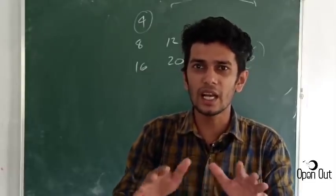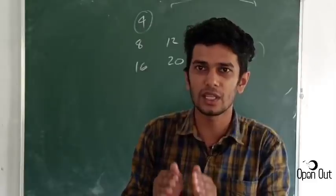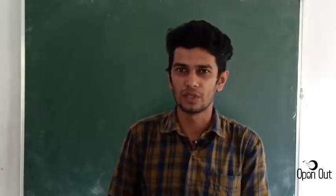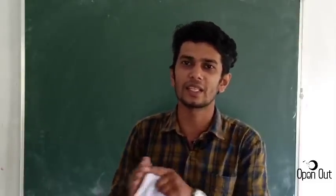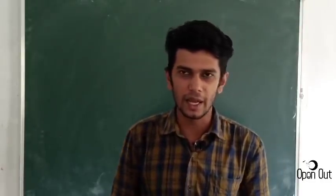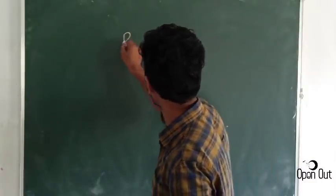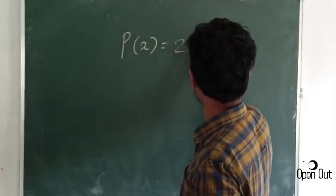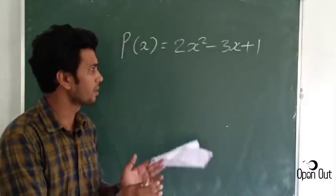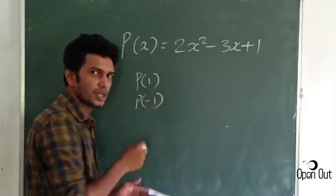These questions have some doubts. If you have any doubts in this video, let us know in the comments. Why are we going to talk about polynomials in this chapter? We are going to talk about p(x) is equal to 2x squared minus 3x plus 1.